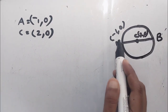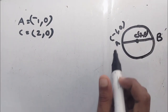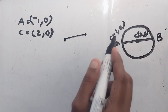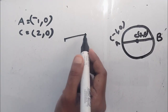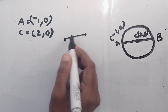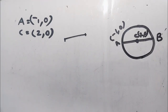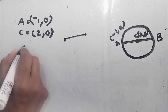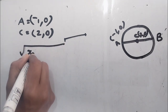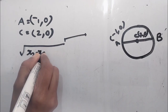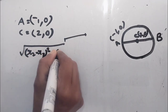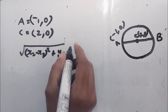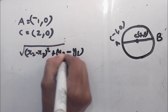Let's see here. We have two equations. We know two equations — that's the same equation. We have a long equation here: the square root of (x2 minus x1) all squared, plus (y2 minus y1) all squared.